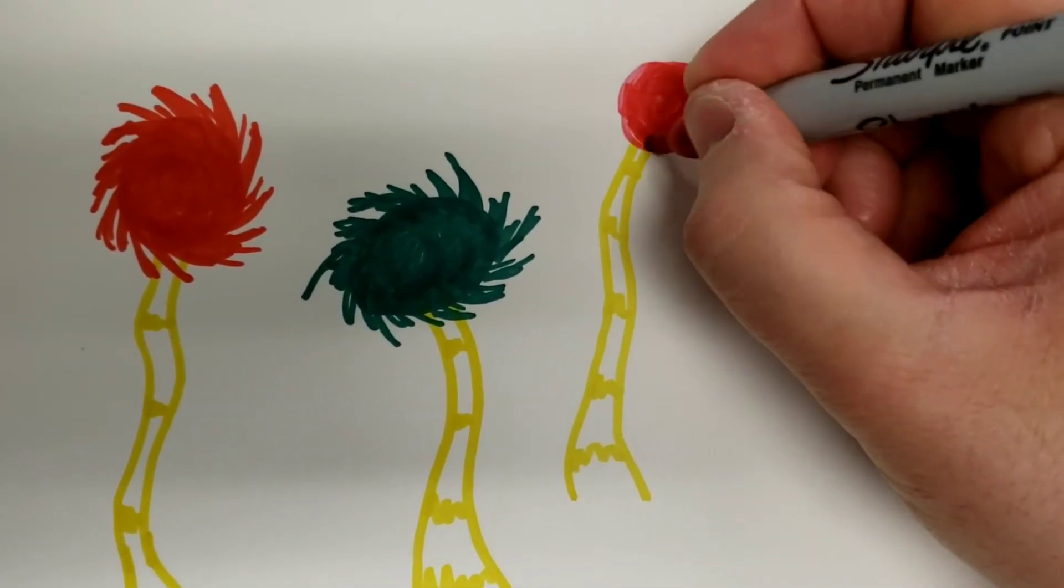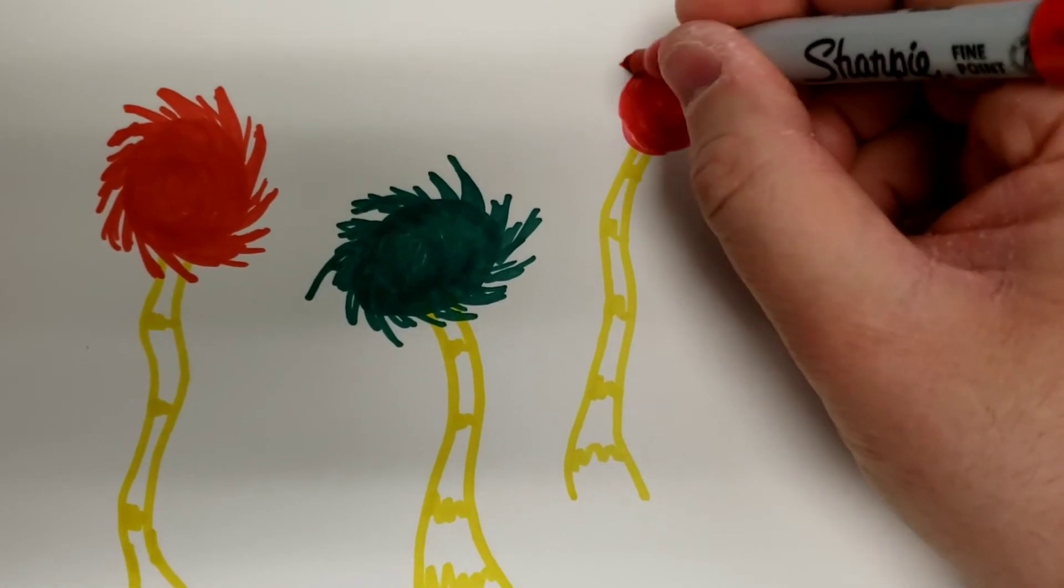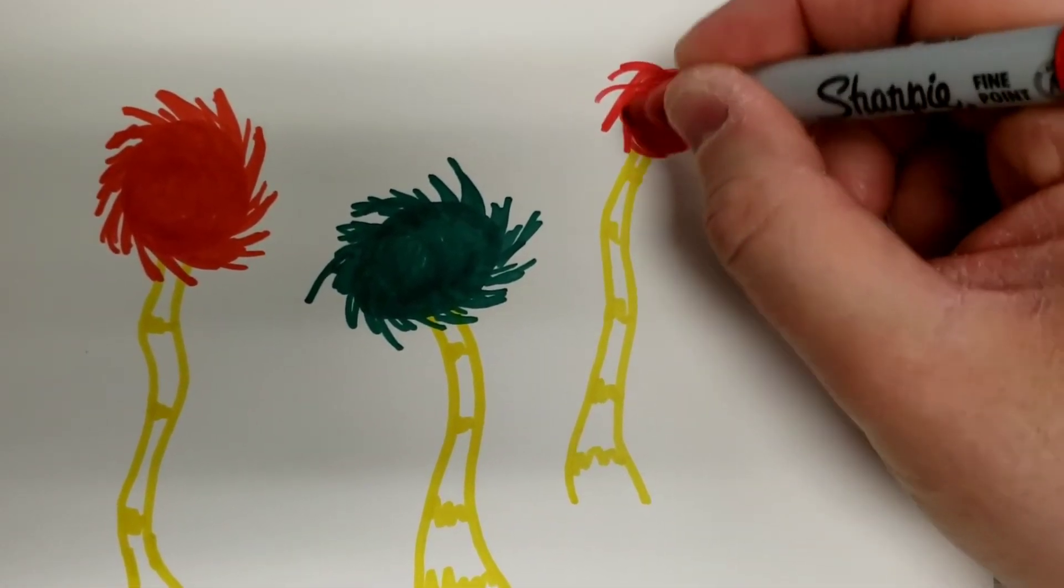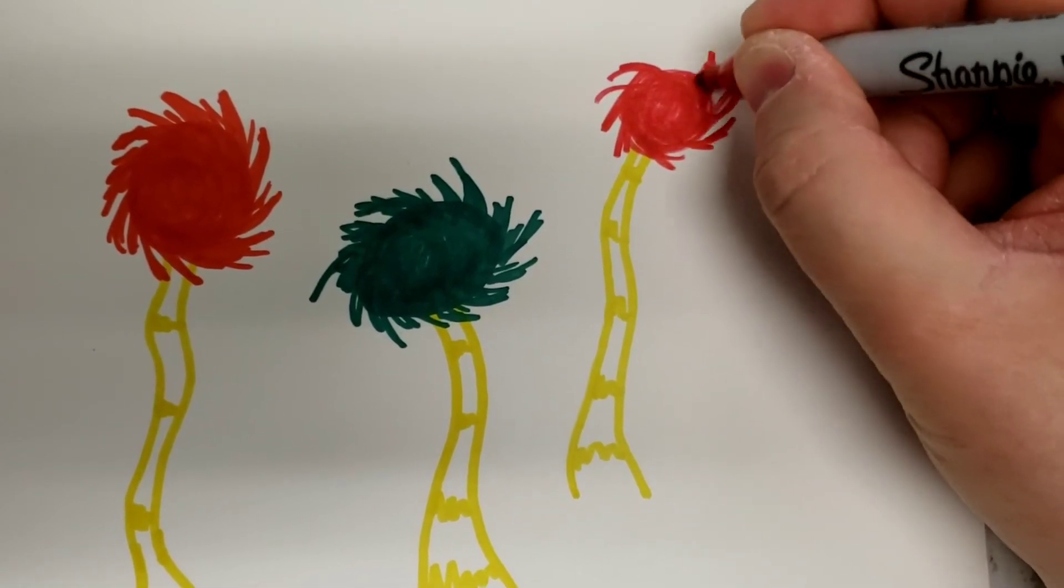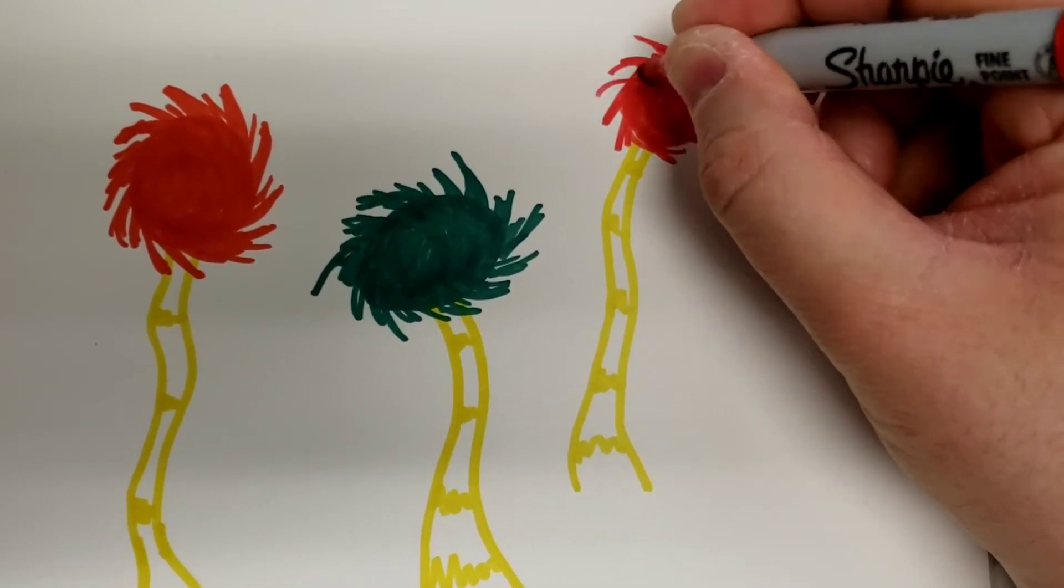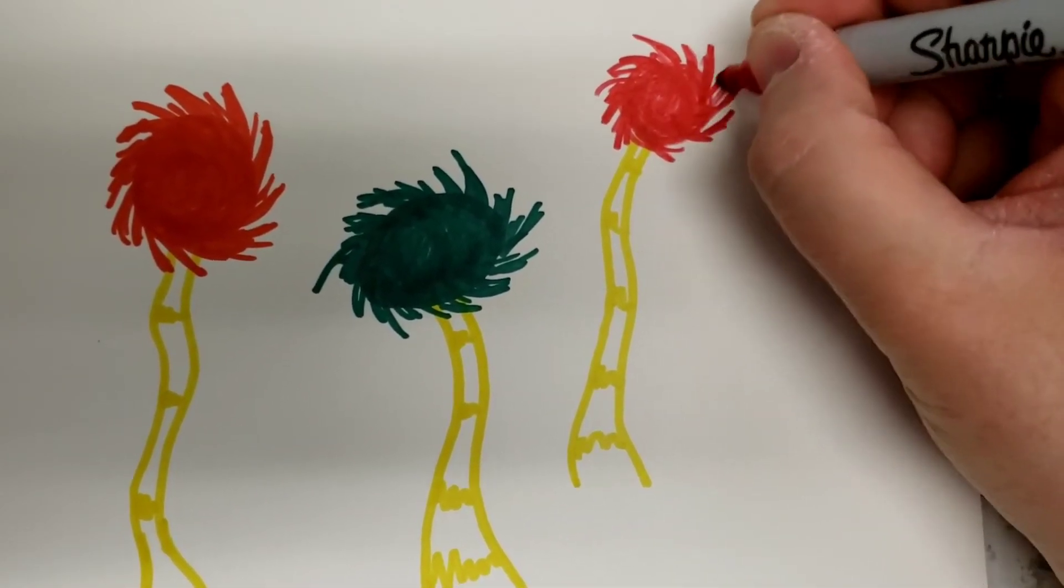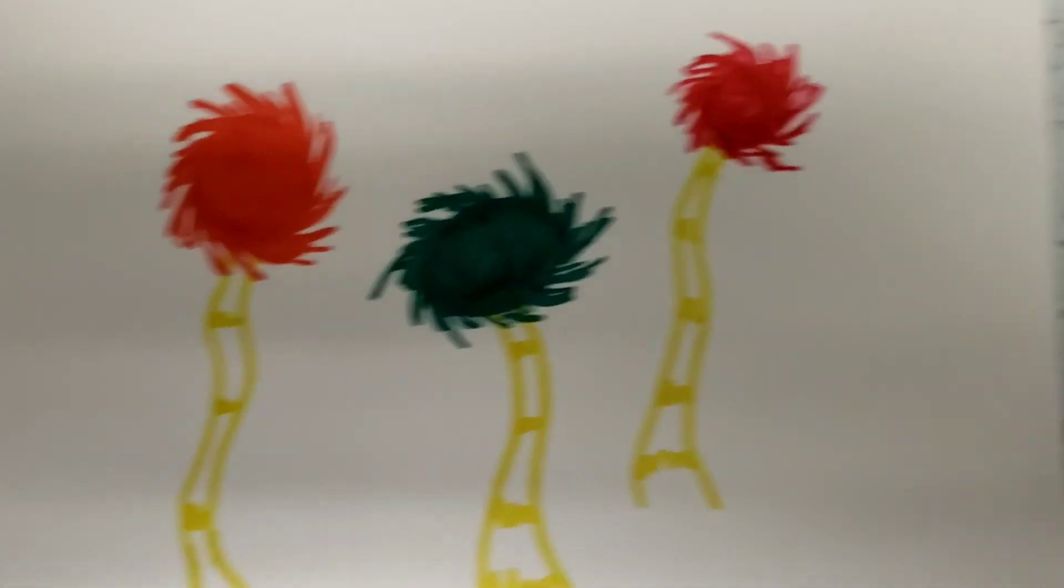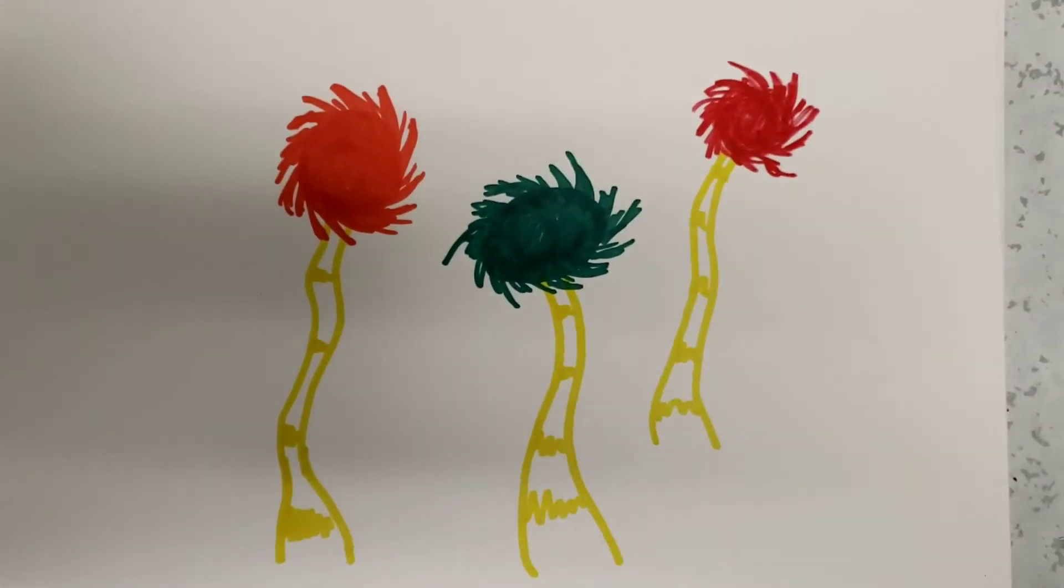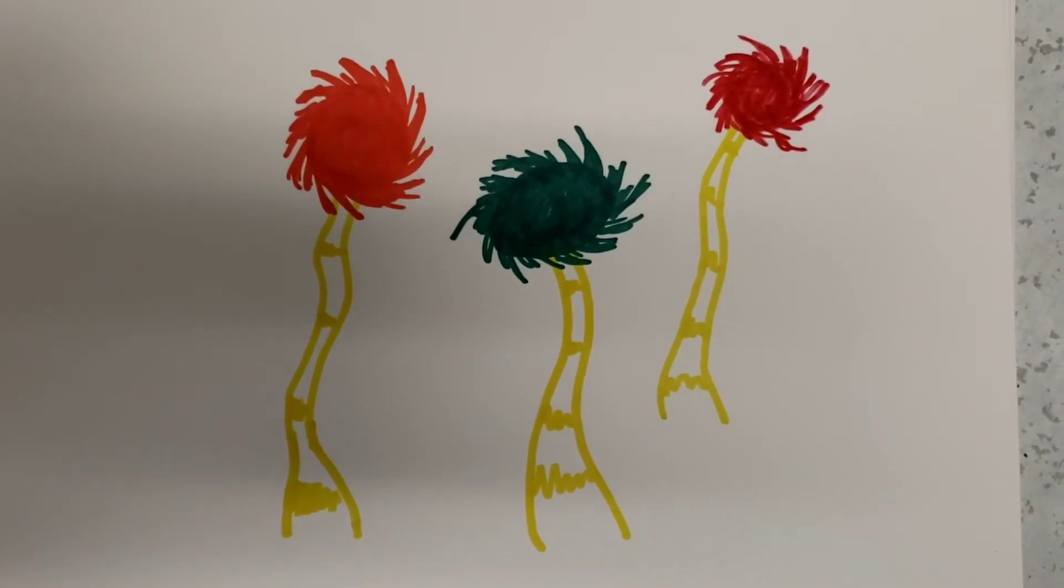Do a circle and then some thick, some thin, going in that circular shape, have it all stick out. There you go, we've got three Truffula trees from the Lorax.